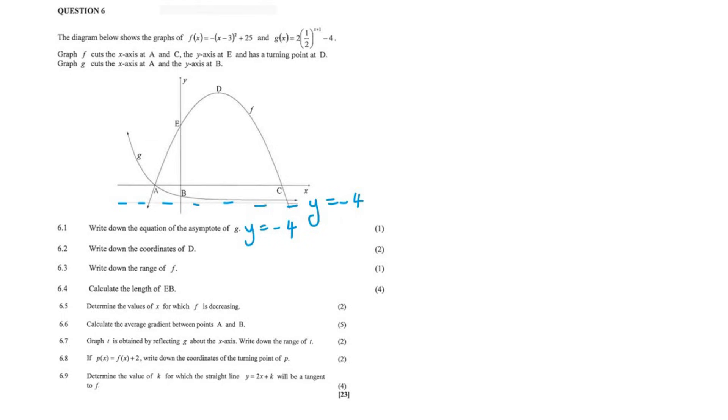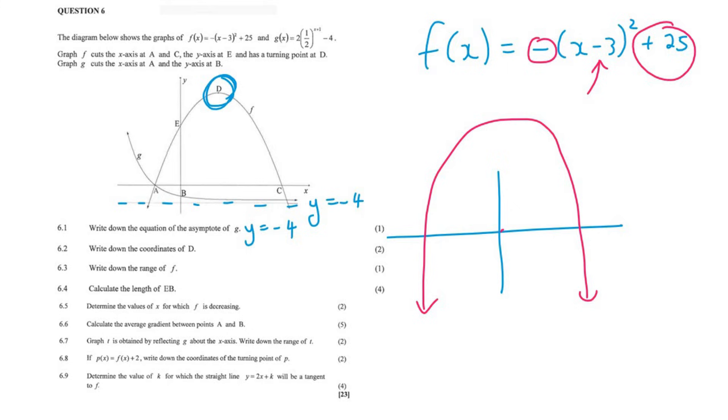For 6.2, it says write down the coordinates of d, the turning point. This is the turning point form of a parabola. A normal parabola starts at zero, zero. This negative flips it upside down. This moves it up by 25 places. And x minus 3 moves it three places to the right. So this coordinate would be 3, because it's moved three places to the right, and 25, because it's moved 25 places up.